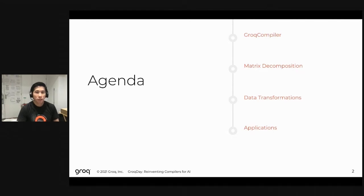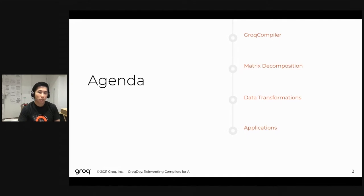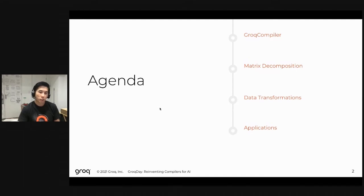For today, we'll be diving into four key areas. First, we'll talk about the Groq compiler and where it fits in the overall software solution that Groq provides. Additionally, we'll give you insights into how we achieve world-class performance using the Groq compiler in a fully automated fashion. We'll describe how we approach compilation onto the Groq chip using a matrix-matrix decomposition example, show data layout transforms, and finally Roberto will demonstrate some of these transformations live and illustrate their impact on overall performance.